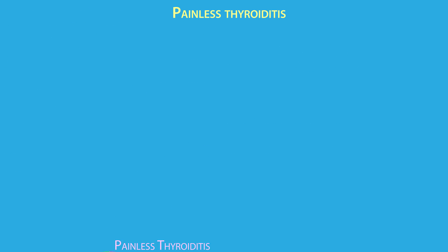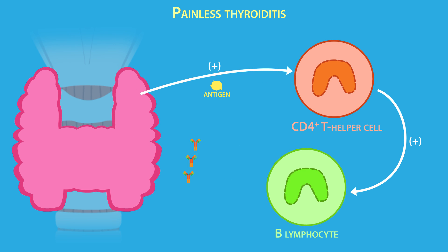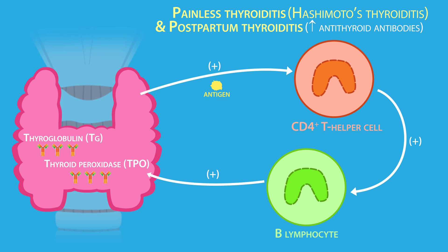Painless thyroiditis accounts for less than five percent of hyperthyroidism cases and is thought to be a form of chronic autoimmune thyroiditis caused by antibodies against thyroglobulin and/or thyroid peroxidase. Hashimoto's thyroiditis is a common cause of painless thyroiditis and is associated with mild hyperthyroidism. Postpartum thyroiditis is similar and typically occurs within one year of giving birth, but is associated with higher serum levels of antithyroid antibodies.